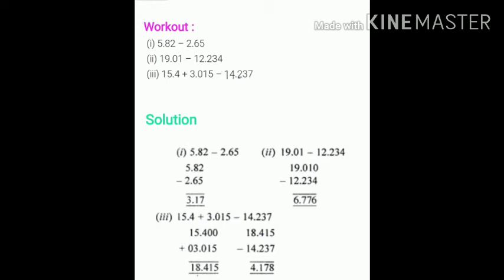19.01 minus 12.234. So first we have to change it into like decimals by putting 1.0 after 1. So the number becomes 19.010 minus 12.234. It gives 6.776. Question number three.